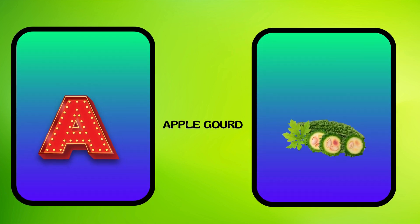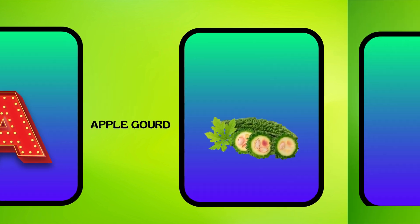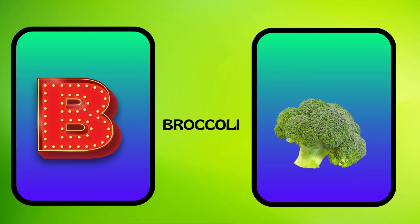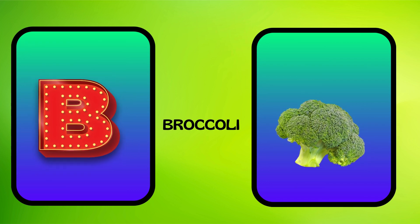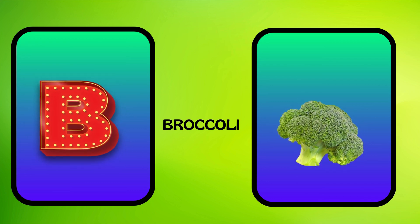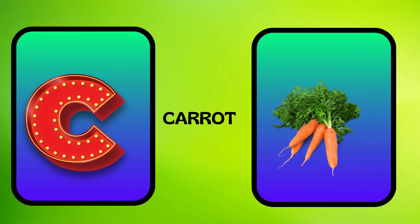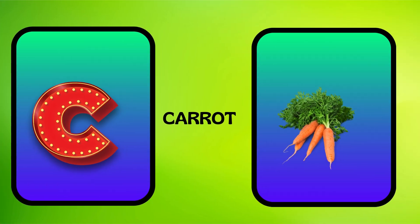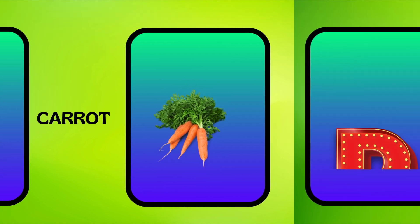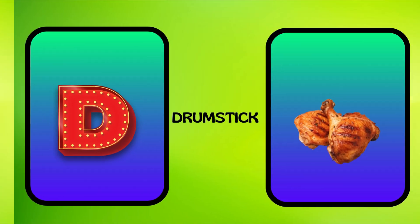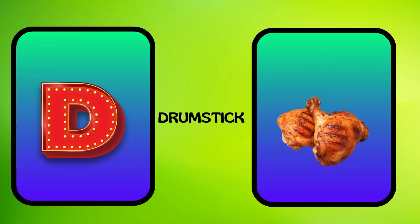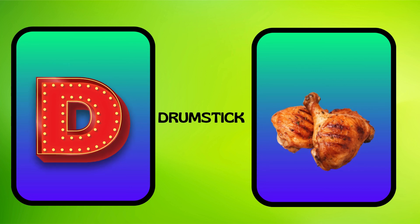A is for apple gourd, apple gourd. B is for broccoli, broccoli. C is for carrot, carrot. D is for drumstick, drumstick.